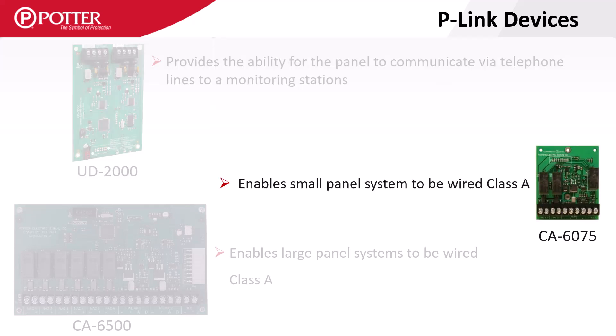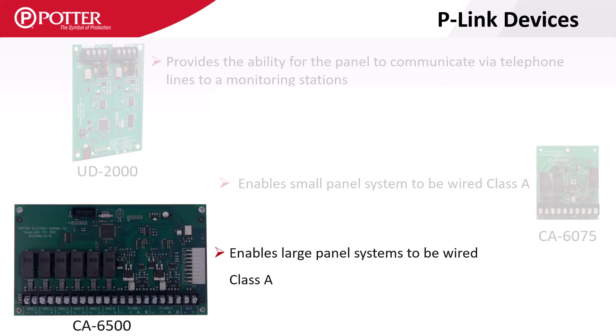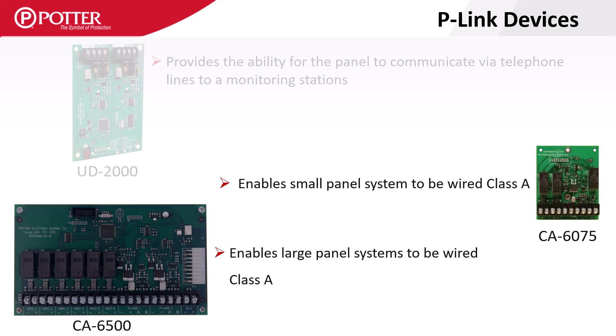There are two different Class-A cards: the CA-6075 for the small format panels and the CA-6500 for the large format panels. Both cards provide the Class-A return terminals for NAC circuits, P-Link circuits, and SLC, all of which are independently configurable. The I-O circuits can only be Class-B.